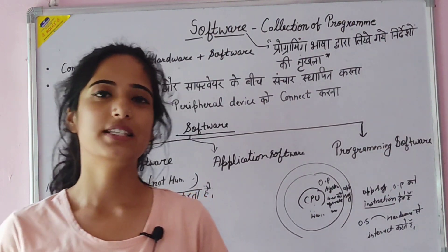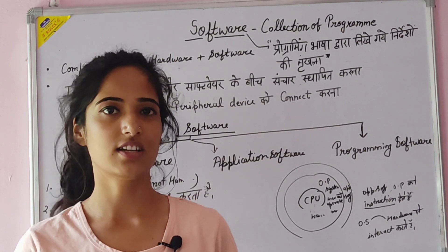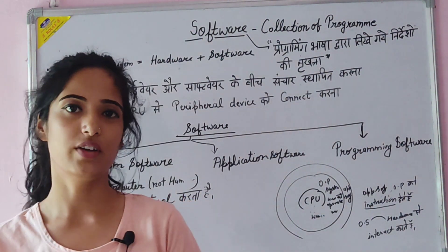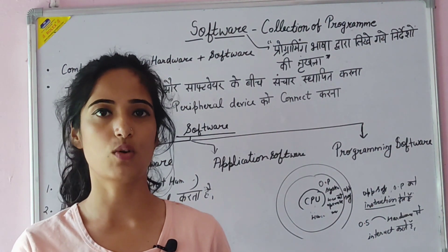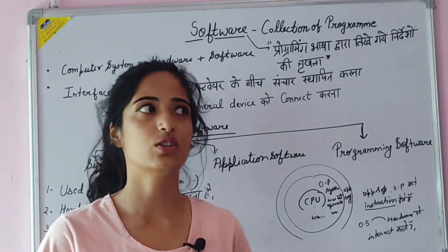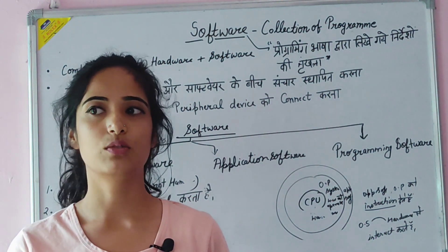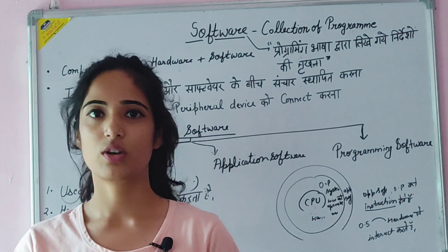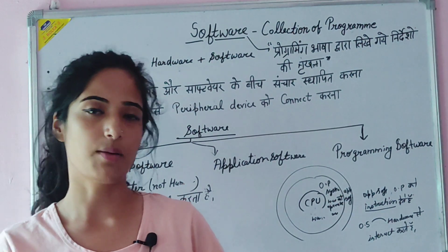What is software? Basically, software is a set of programs or a collection. There are two things on the computer: one is hardware and one is software. Hardware includes keyboard, mouse, CPU — whatever you can physically find. But software is something we use but cannot touch. For example, YouTube — you use it for watching videos or listening to music, but you cannot touch it. These are all software examples.